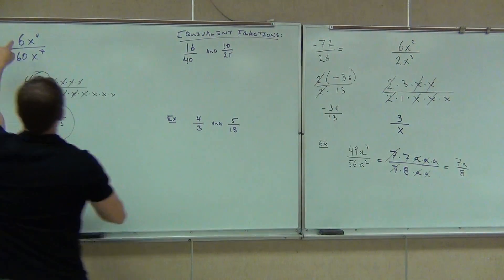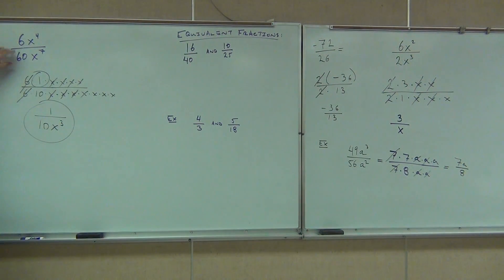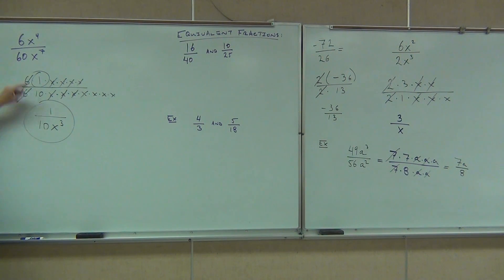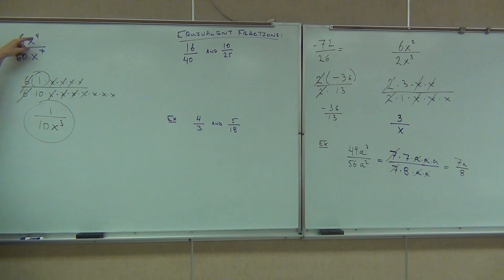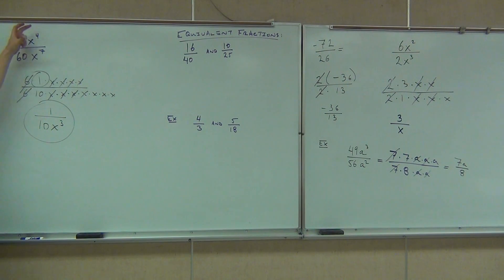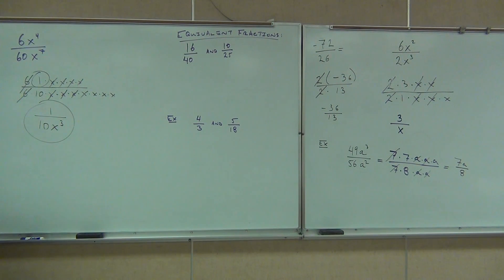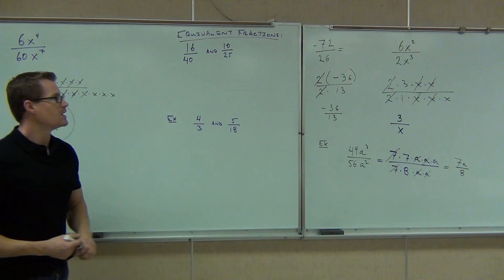Could you get directly from here to here? Of course you could. Six to sixty — simplify that like you normally would: one ten. Four and seven — seven minus four is three. The bigger number is on the bottom, so we're taking four away from that seven, leaving an extra third on the denominator.